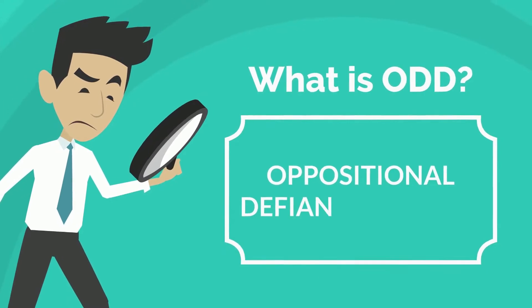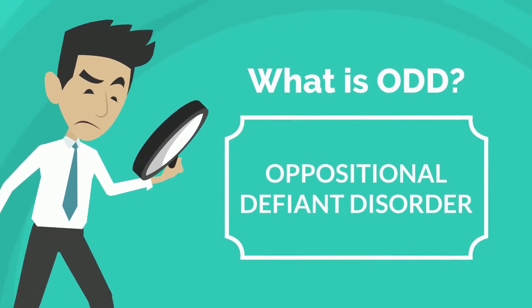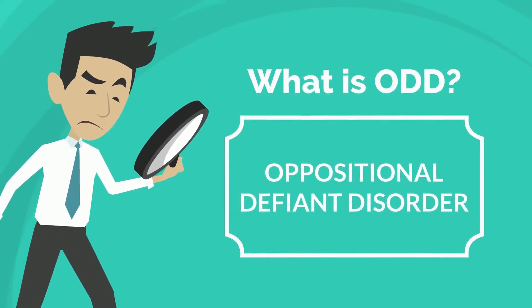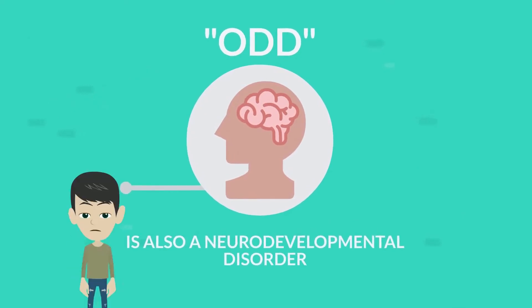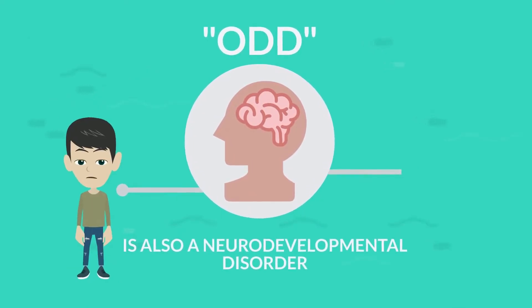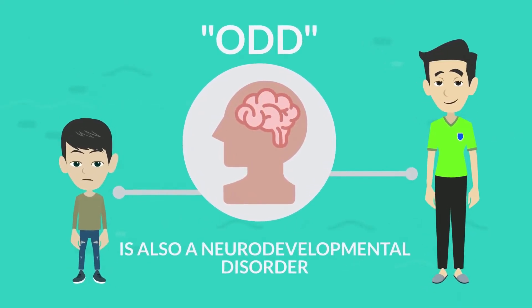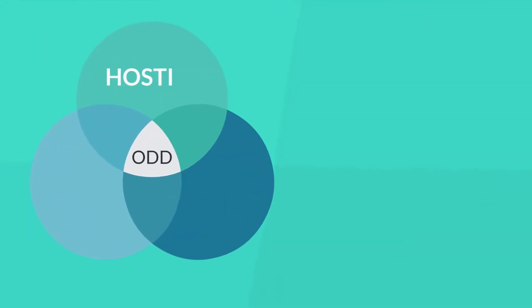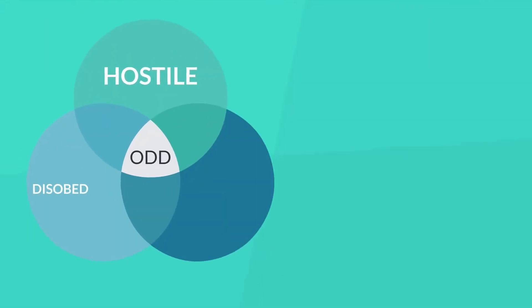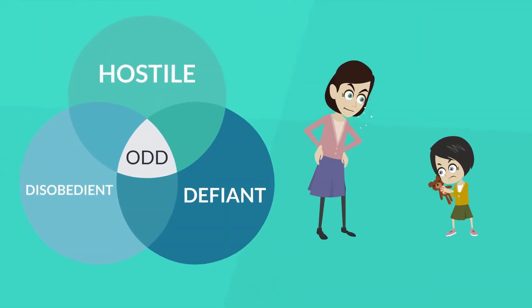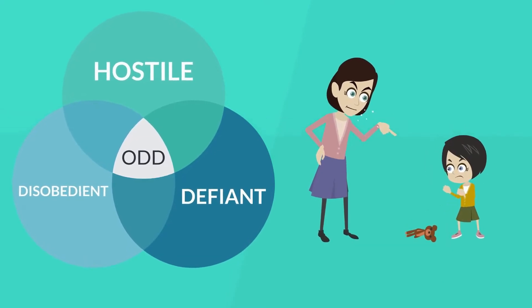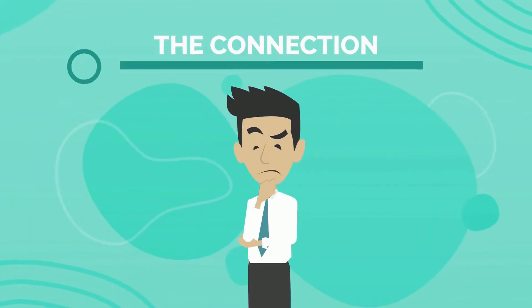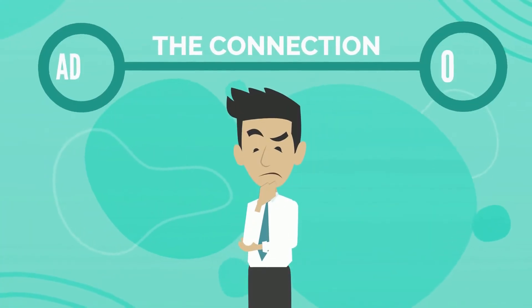Now let's move on to oppositional defiant disorder, or ODD. ODD is also a neurodevelopmental disorder that affects children and teenagers. It is characterized by a pattern of hostile, disobedient, and defiant behavior towards authority figures.